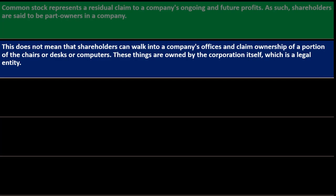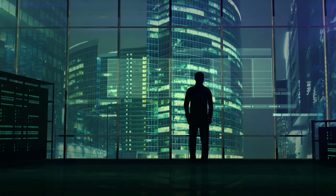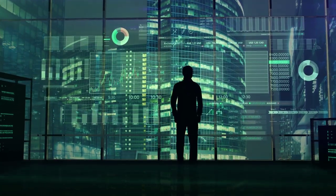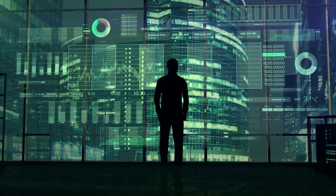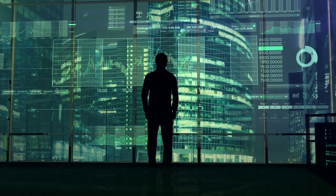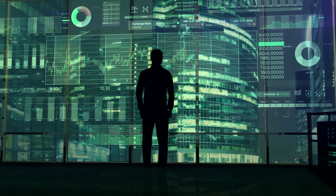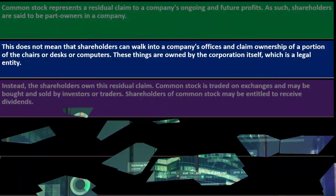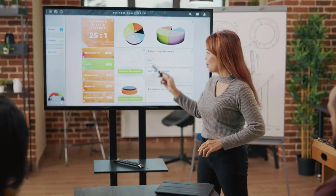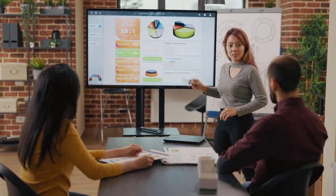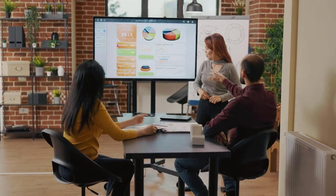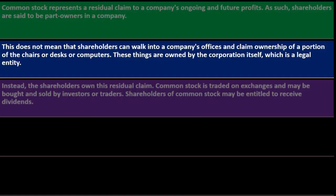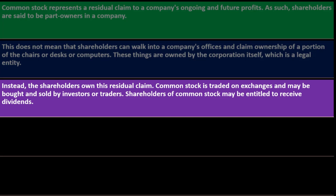Assets are owned by the corporation itself — it's a legal entity. Corporations are given rights similar to those of human beings, such as the right to own property — a right we artificially grant to the corporation. The corporation then becomes its own legal entity that owns the assets, and the shareholders hold a residual claim. Common stock is traded on exchanges and may be bought and sold by investors or traders.